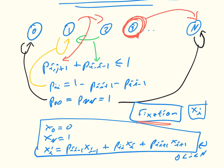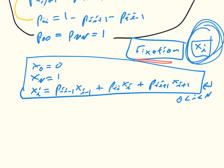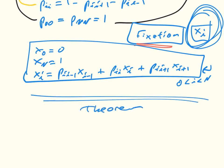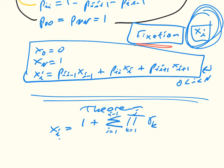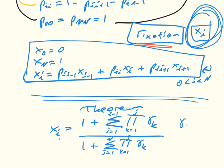This leads to our first theorem — there is a general formula for this quantity. The theorem is that X_i is equal to: 1 plus the sum from j=1 to i-1 of the product from k=1 to j of gamma_k, divided by a normalization factor of 1 plus the sum from j=1 to n of the product from k=1 to j of gamma_k, where gamma_k is just the ratio P(k, k-1) over P(k, k+1). This theorem allows us to calculate the fixation probability for any such ratio.